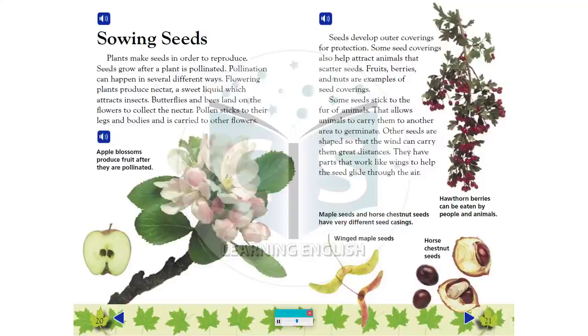Flowering plants produce nectar, a sweet liquid which attracts insects. Butterflies and bees land on the flowers to collect the nectar. Pollen sticks to their legs and bodies and is carried to other flowers. Apple blossoms produce fruit after they are pollinated.